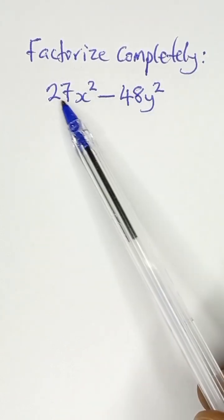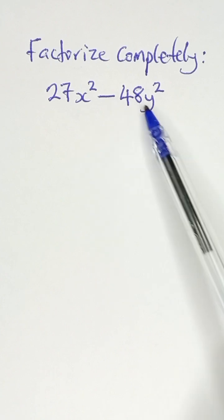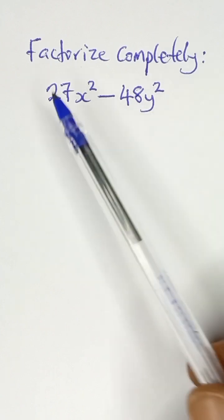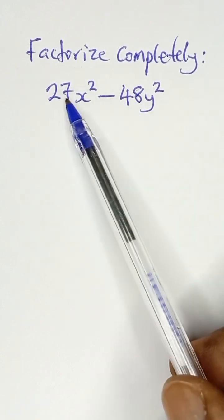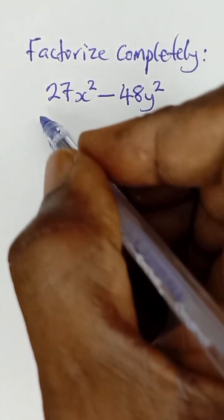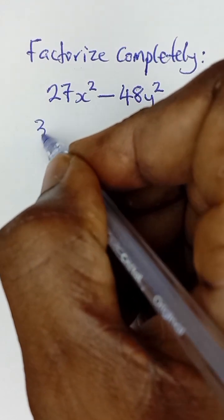Factorize completely 27x² minus 48y². Now looking at these numbers, a factor is common to them, and that factor is 3. 27 and 48 can divide by 3, so I'm going to bring out 3 and introduce a bracket.